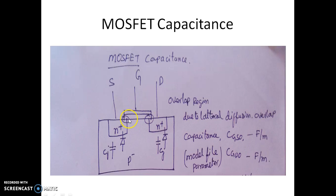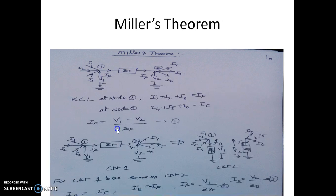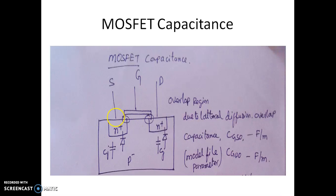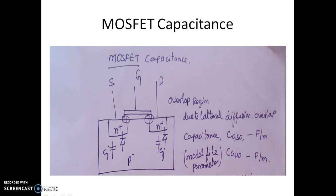CGSO and CGDO are due to the gate oxide between the gate terminal and the substrate. We also have two more capacitances: a junction capacitance between the n-type source and the P-type substrate, and a junction capacitance CJ between the drain and the substrate — a P-N junction. Compared to the overlap capacitance, CJ is very minimal, so in the initial analysis we only deal with the oxide overlap capacitance.